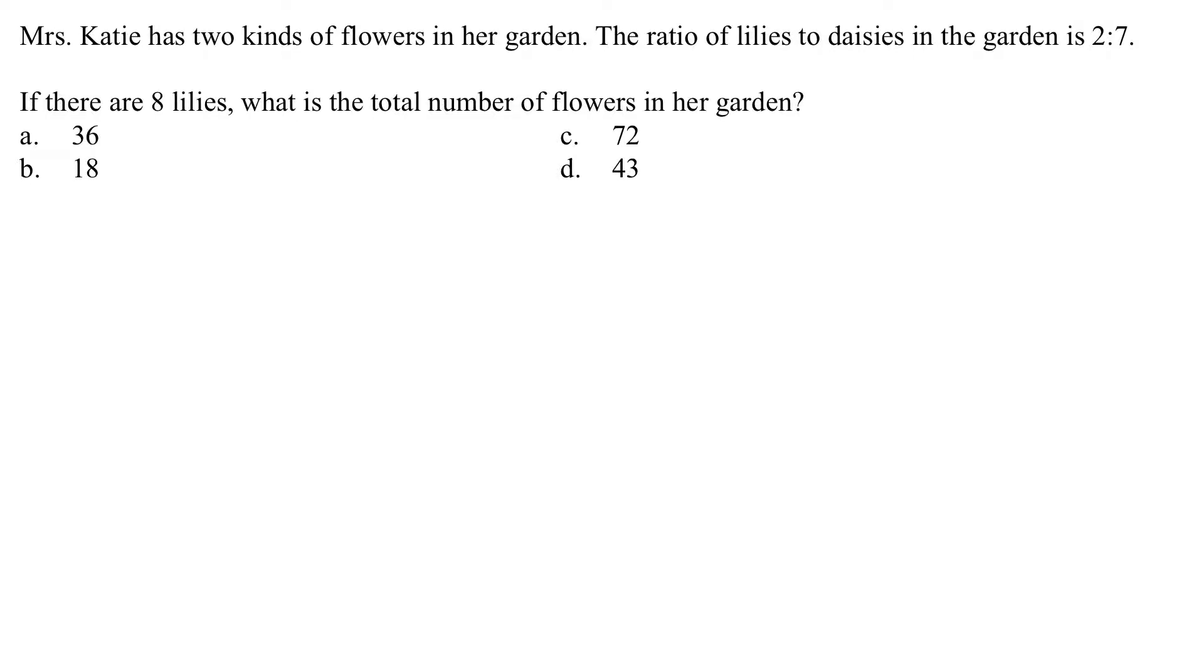All right. So Miss Katie has two kinds of flowers in her garden. The ratio of lilies to daisies in the garden is two to seven. If there are eight lilies, what's the total number of flowers in her garden?